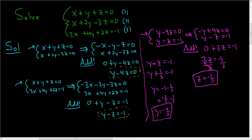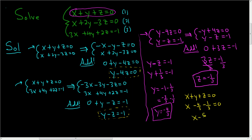Now we have y and z. The best choice is to go back to the first equation: x plus y plus z equals 0. We don't know x yet, so we plug in y equals negative 4 thirds and z equals negative 1 third. We get x minus 5 thirds equals 0, so x equals 5 thirds.